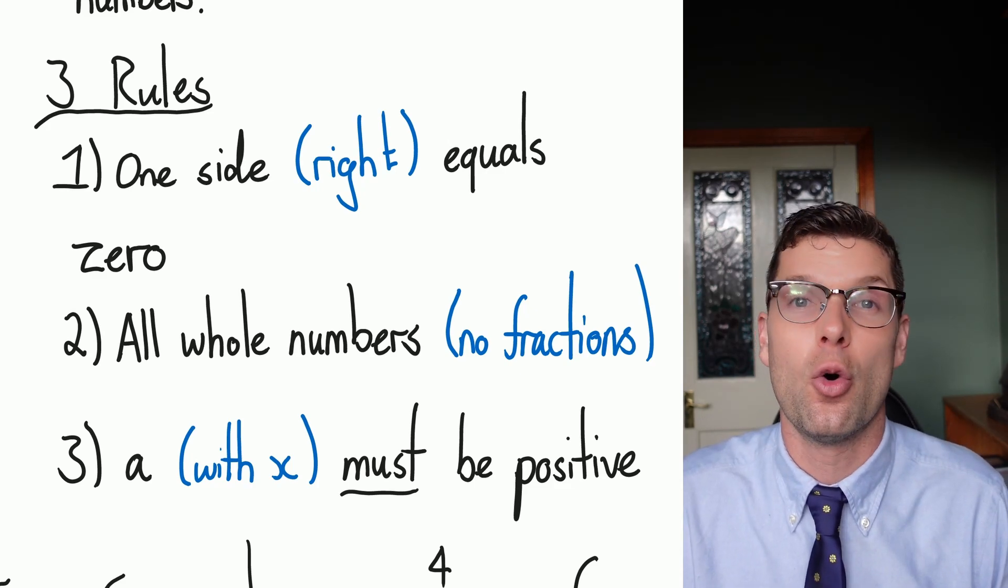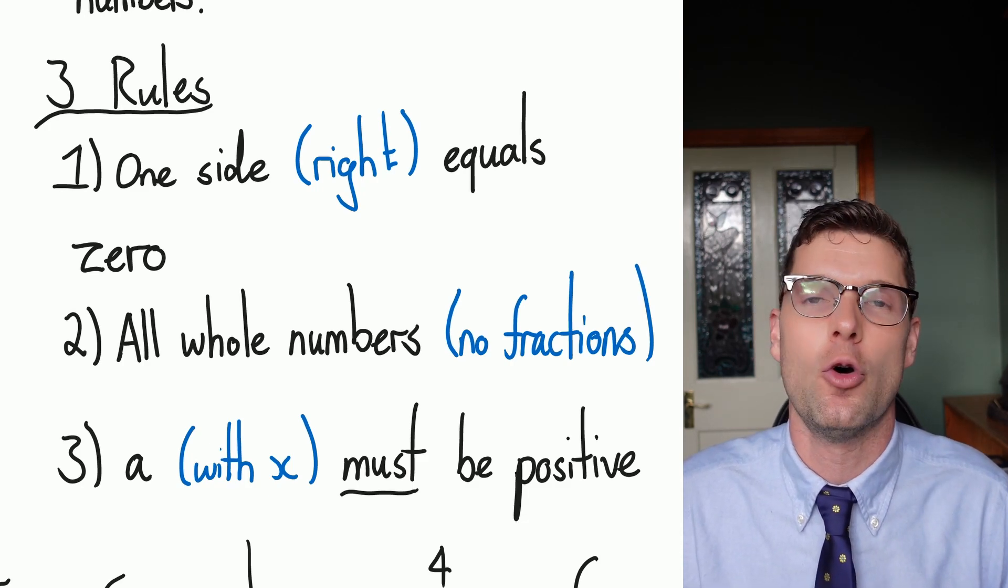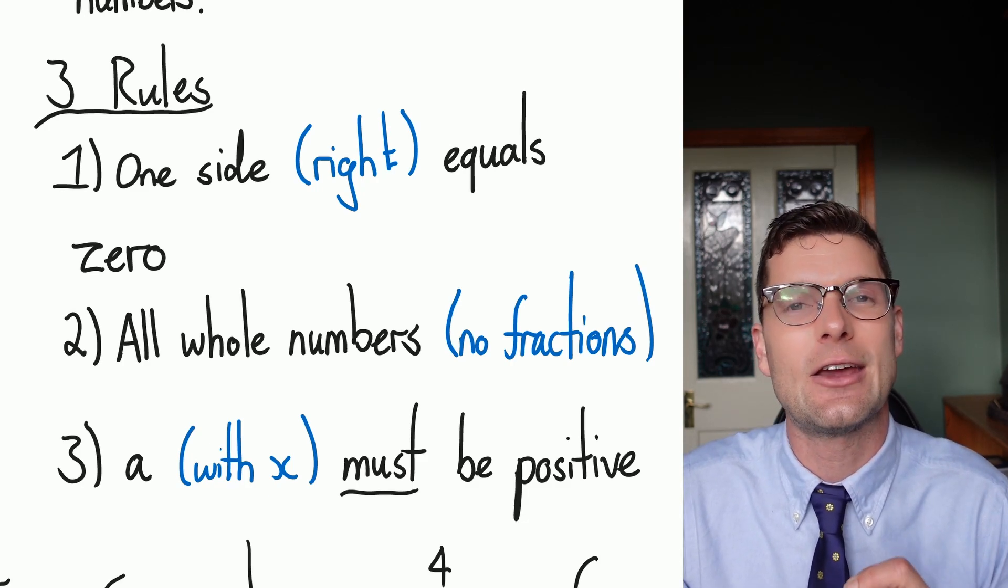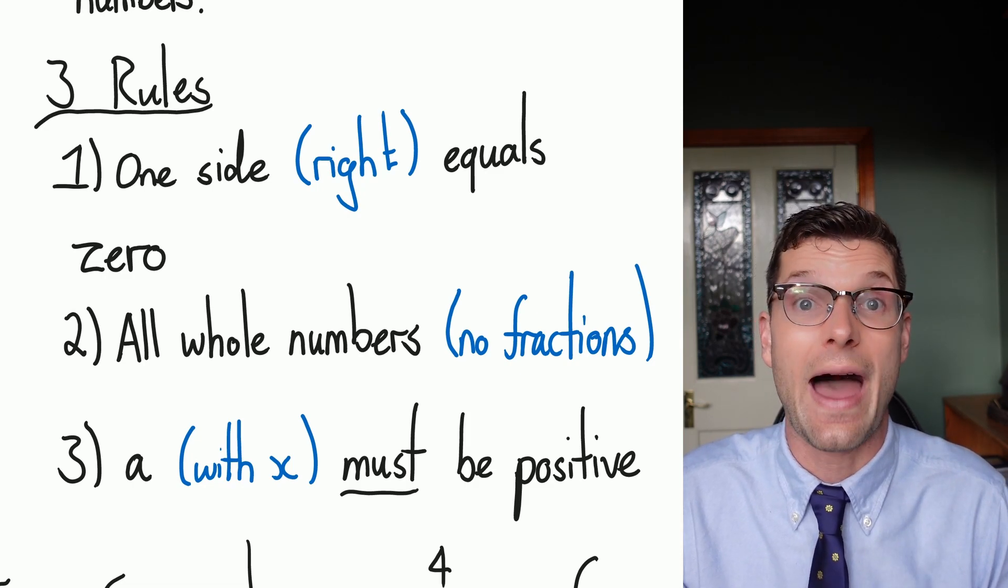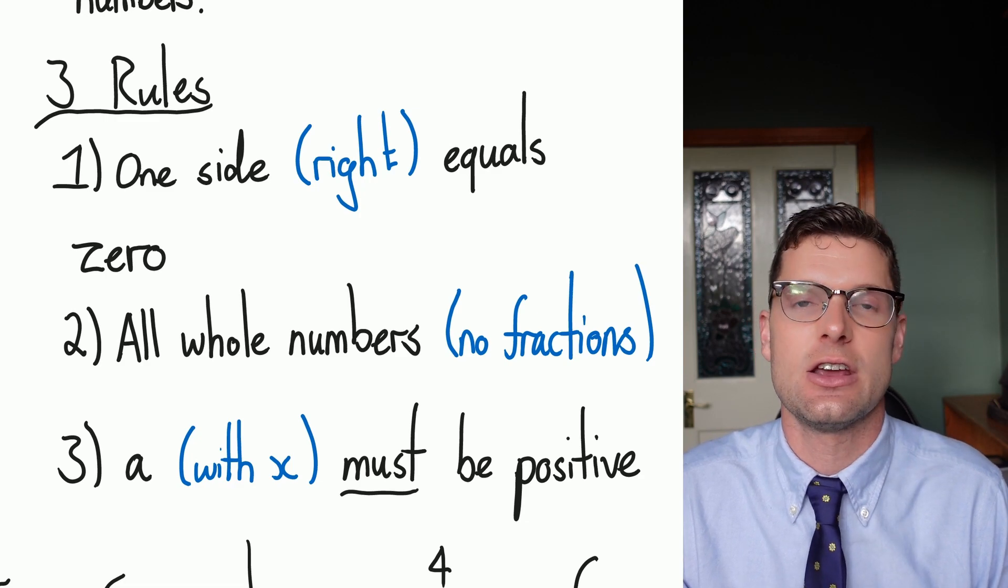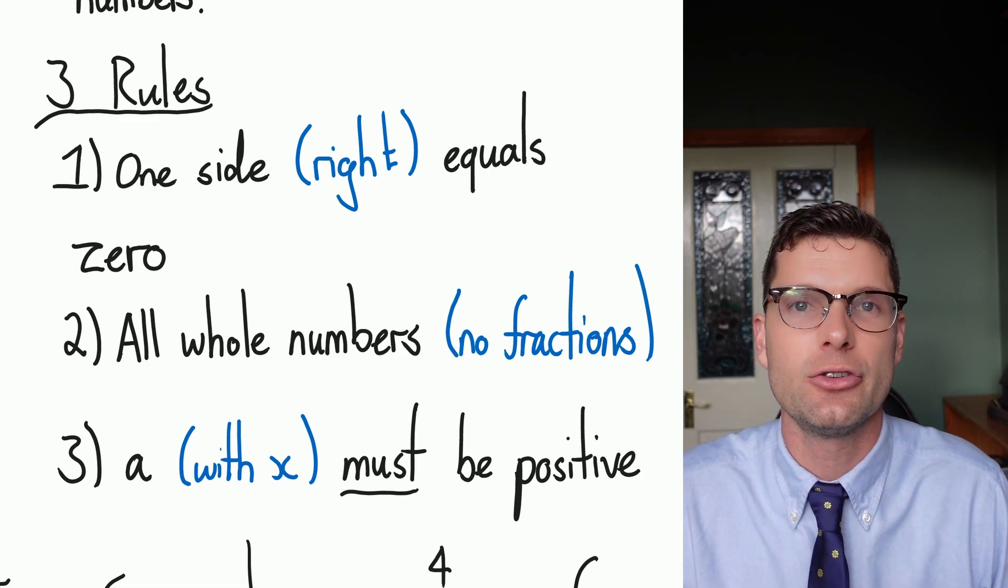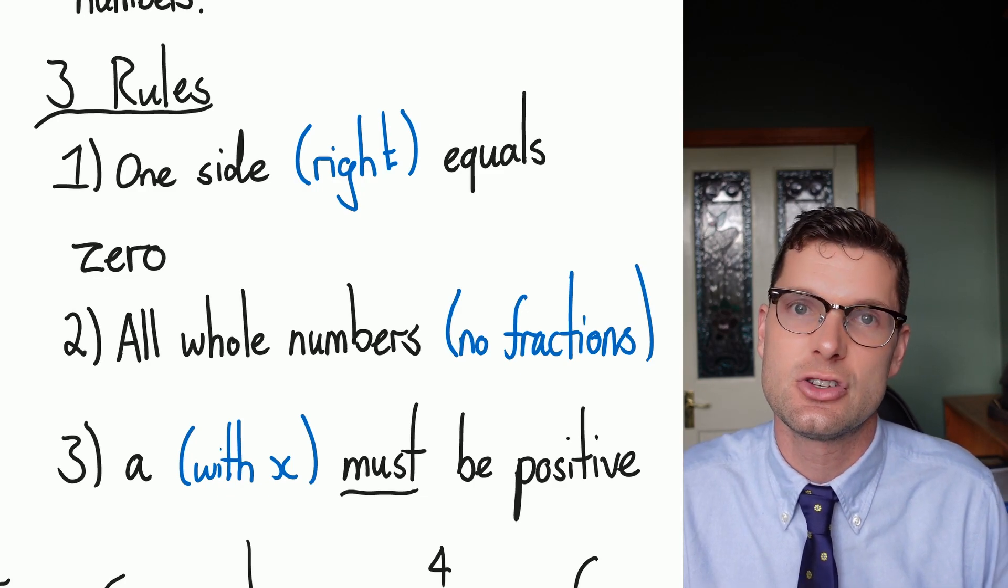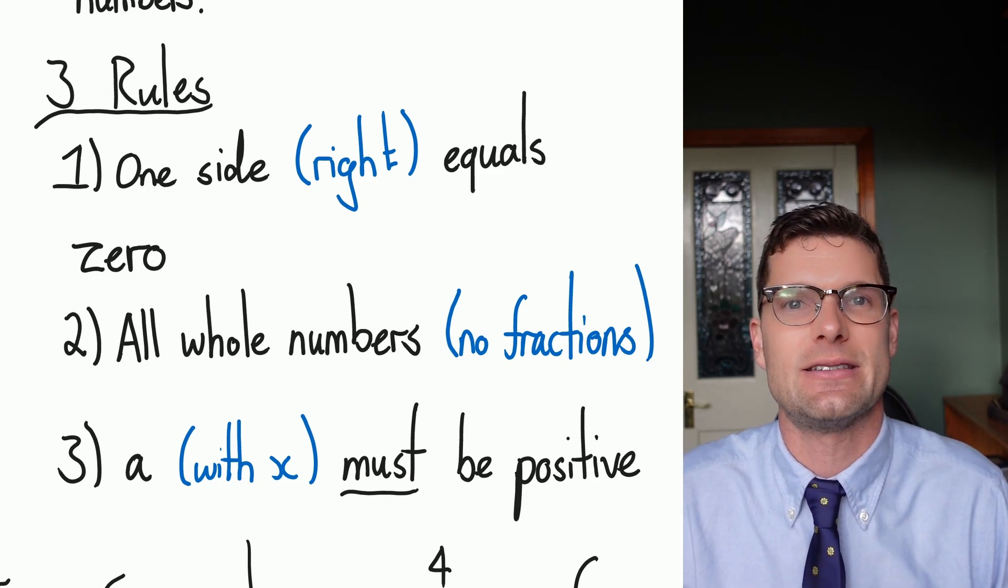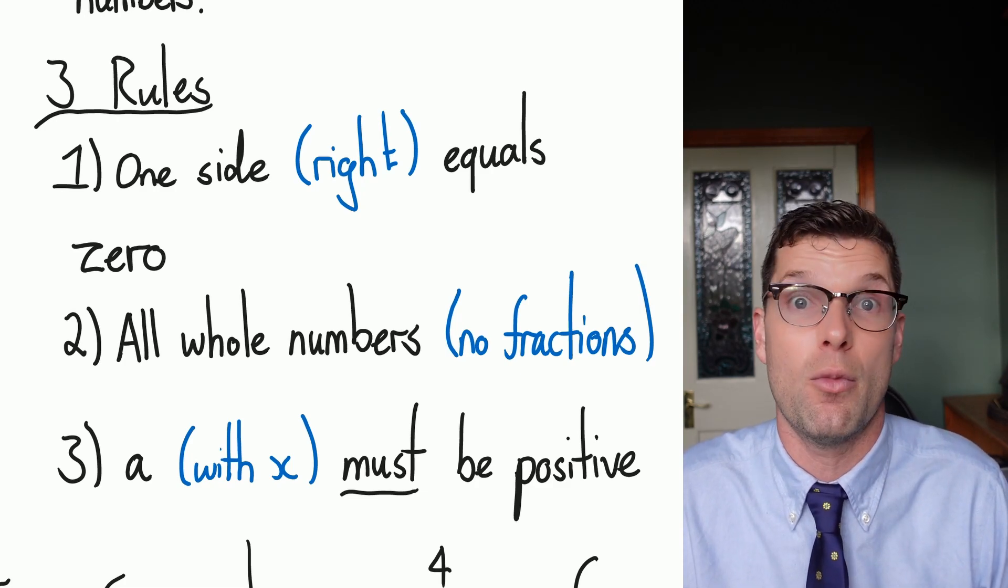Finally, just to make sure that all our answers look exactly the same, so we have it in a general formula, we need to make sure that the coefficient with x or the a is always positive. It's not going to change the equation if we have that as a negative one. But if we multiply it by a negative number to turn it positive, everyone's answer is going to look exactly the same, which will help us communicate our knowledge more effectively.